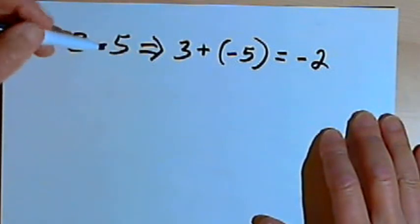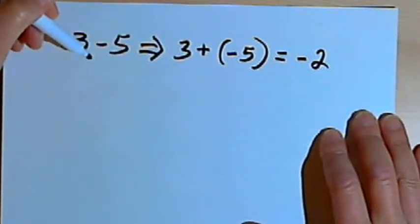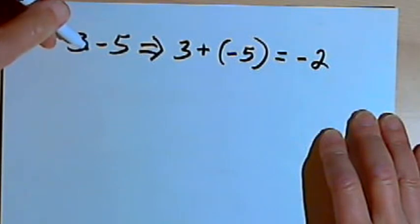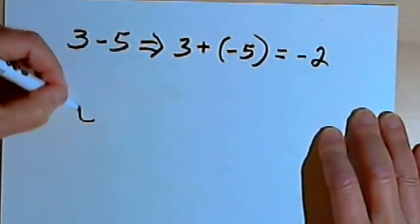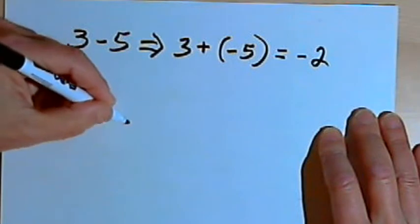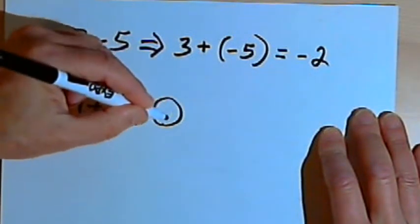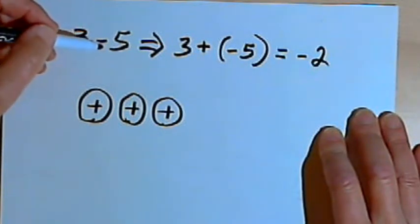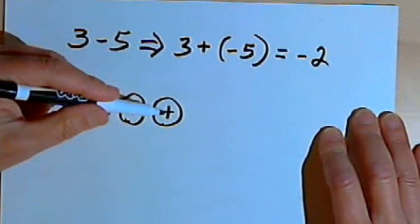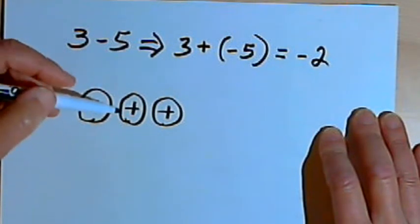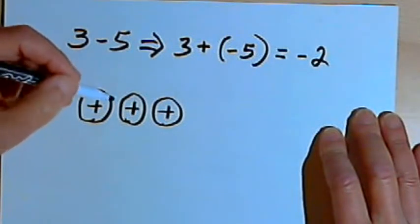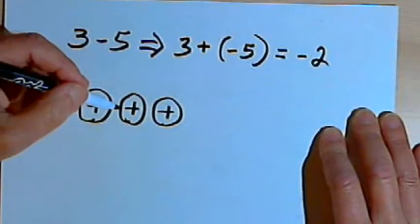To visualize this, I'll use the model from the addition videos with positive and negative chips. Let's say 3 is represented by 3 positive chips. I need to subtract 5, but I've only got 3 chips. Remember, a positive and a negative chip together neutralize each other — one positive plus one negative equals zero.